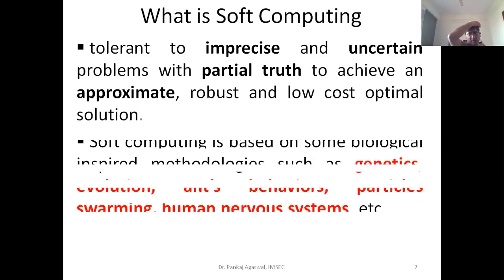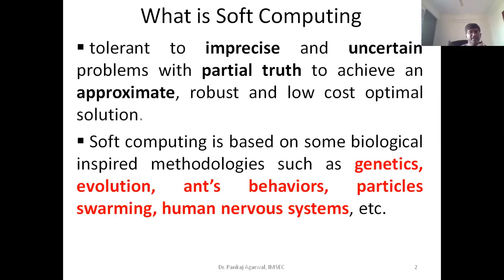Soft computing draws its motivation from things around us. For example, ants, when they work in a coordinated fashion, are able to solve big problems that are beyond imagination given their size. Soft computing draws a lot of motivation from biological concepts and methodologies — such as genetics and evolution, including the survival of the fittest concept given by Charles Darwin, the behavior of ants and other social organisms, the particle swarm process, and the human nervous system.